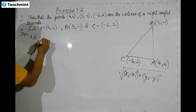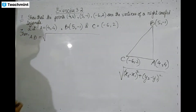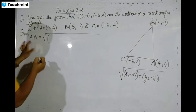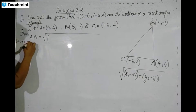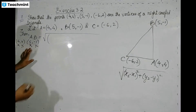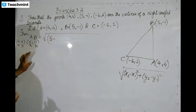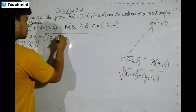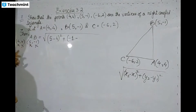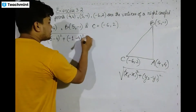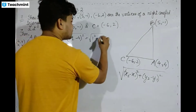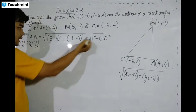AB is equal to root over — taking A(4,4) as (x1, y1) and B(5, minus 1) as (x2, y2) — so x2 minus x1 is 5 minus 4, that is 1 squared, plus y2 minus y1 is minus 1 minus 4, that is minus 5, so minus 5 squared. That gives root over 1 squared plus minus 5 squared.